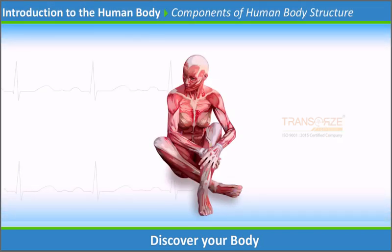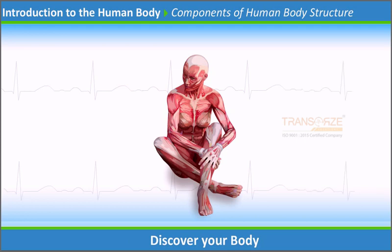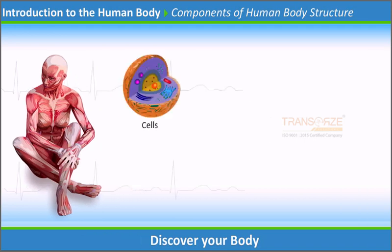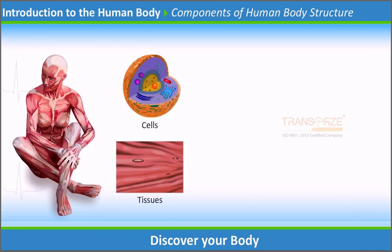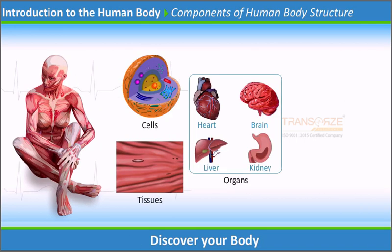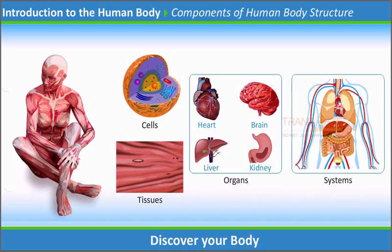Components of Human Body Structure: The human body is not a single structure, but one made up of four components. The structure of a human body has four components, namely: cells, tissues, organs, and systems. Now let us learn about each one of them.